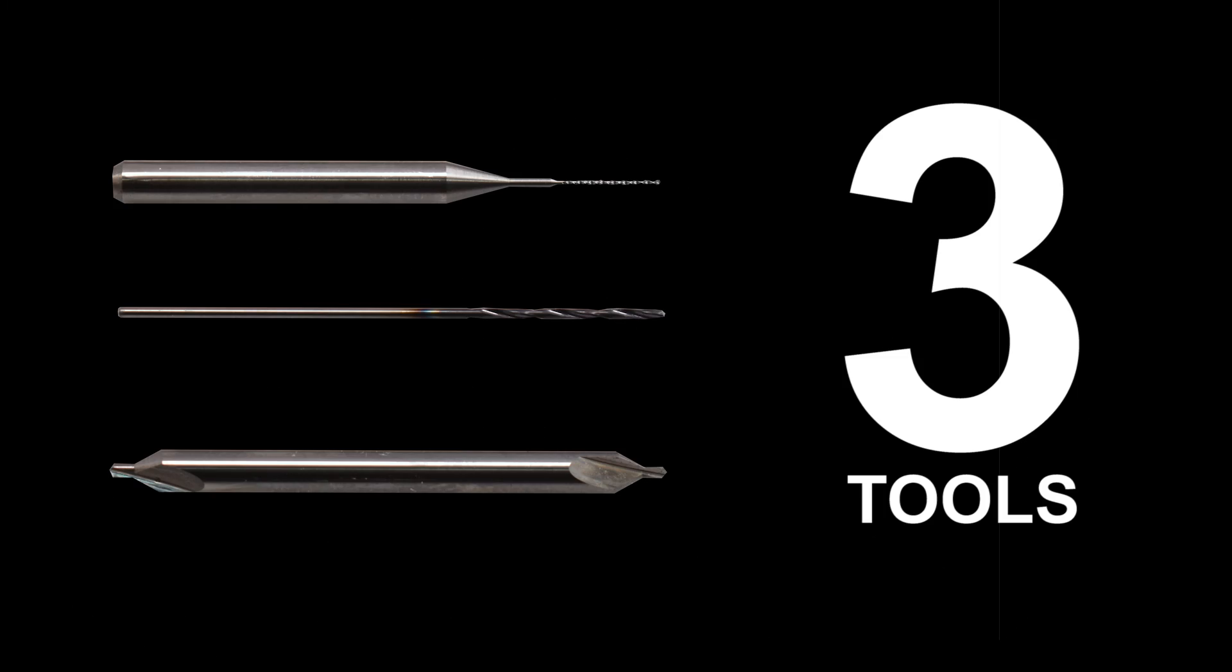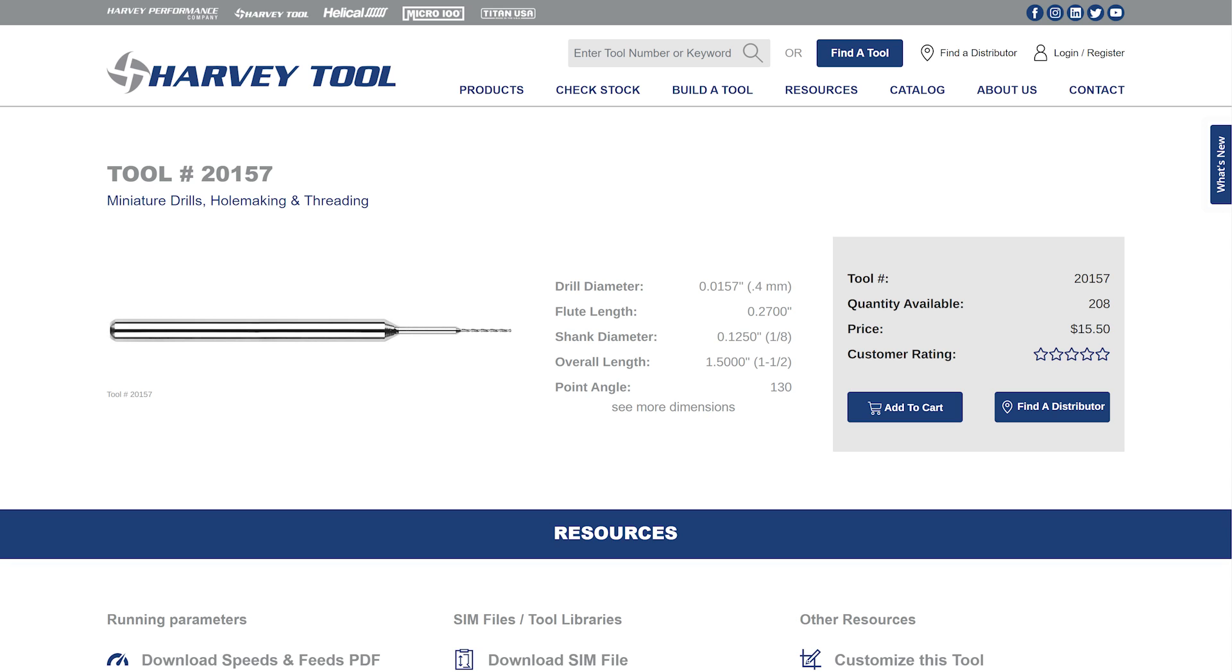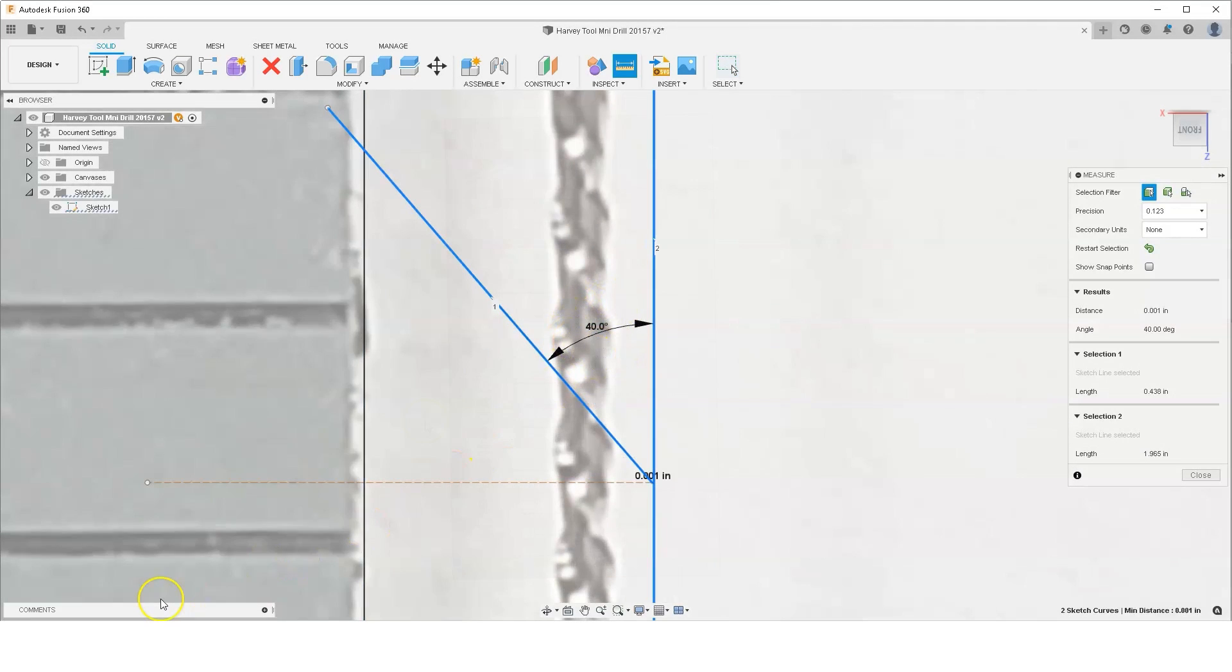We'll actually be using three different tools for this job. The first tool is a Harvey tool number 20157. It's a carbide drill with a step shank and it's 0.0157 diameter which is roughly 1/64th. It has a 0.270 length of cut and is a 40 degree helix.